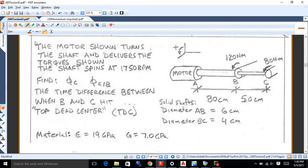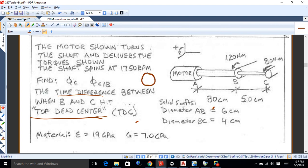So let's say we've got a motor here, and it turns the shaft, delivers the torque shown, and the shaft spins at 1,750 RPM. Let's find the angle of C, and the angle of C as it twists with respect to B, okay? So we're going to assume that A is our reference point. We're going to figure out what C is doing with respect to A. That's B, which is that angle sub C. And then also we'll figure out how C twists with respect to B. And then let's also figure out, after these loads are applied, what's the time difference between when B and C hit top dead center.